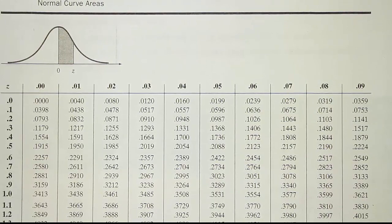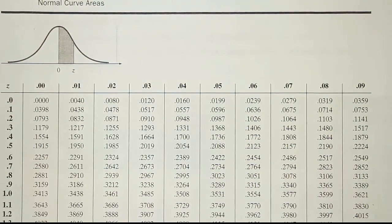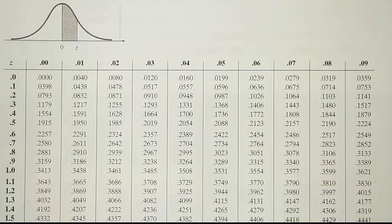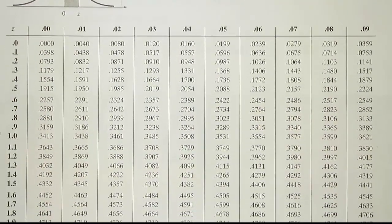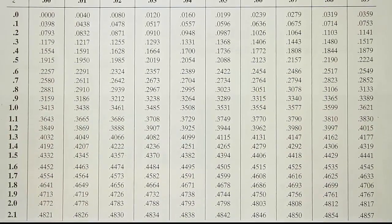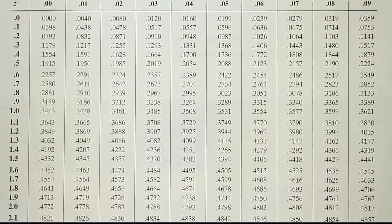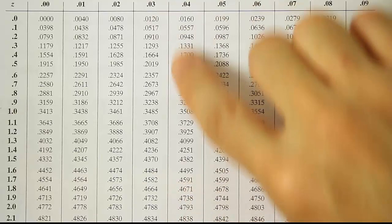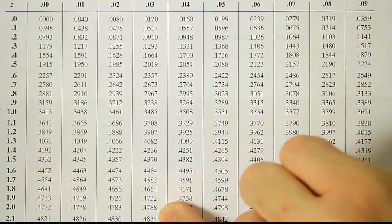We're looking up 2.13 on our z-table. Let's scroll down until we get to 2.1. There's our 2.1 row, and we see that 2.13 gives us 0.4834.